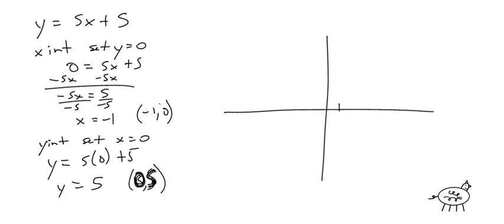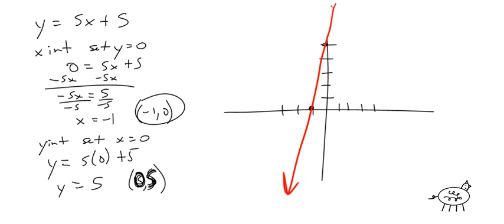So negative 1, 0 is here, and 0, 5 is here. Graph it as nice and neat as possible, and that's your graph. Part of your homework is just identifying the x and y intercepts. For example, given a graph, you look at where the line crosses the x-axis — it's negative 3, 0 — and where it crosses the y-axis — it's 0, negative 4.